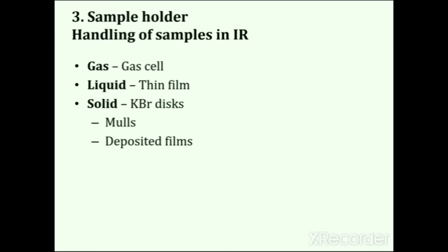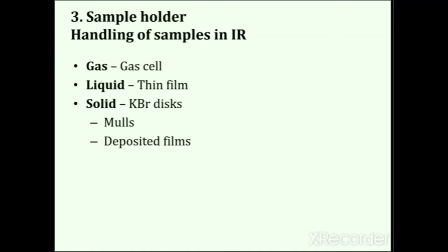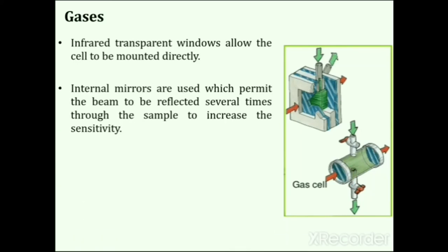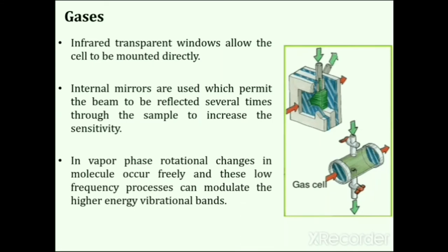Next part is the sample holder, used for holding the sample. Sampling techniques in IR depend on whether the sample is a gas, liquid or solid. For gas samples, a gas cell is used — the gas sample is inserted in the cell, mounted between infrared transparent windows. Internal mirrors permit the beam to be reflected several times through the sample to increase sensitivity. More reflections increase the chances of interaction of IR radiation with the gas sample. In vapor phase, rotational changes in the molecule occur freely, and this low-frequency process can modulate the higher energy vibrational bands.